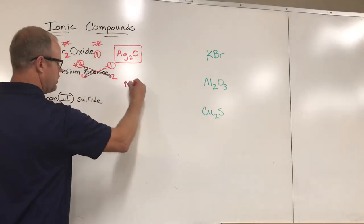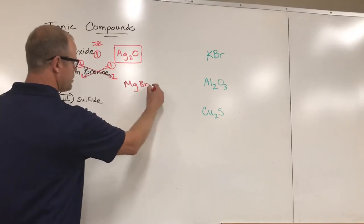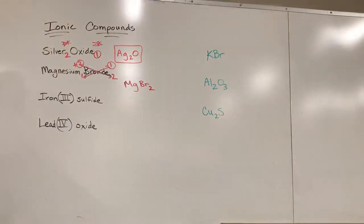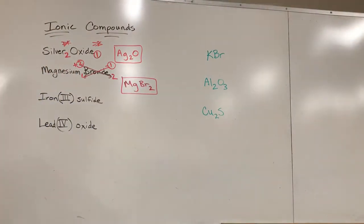Let's write that as an actual formula. Magnesium is Mg, bromide is Br, but I need two of those for every one magnesium. We just don't write the one on the magnesium - it's there without writing anything. There's magnesium bromide.